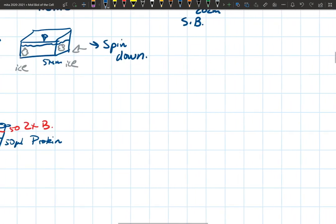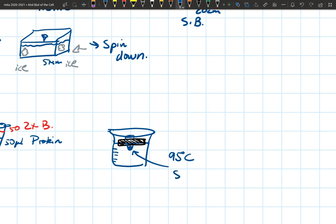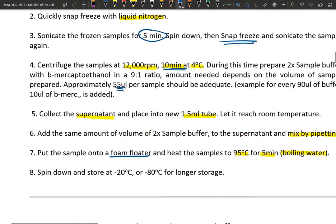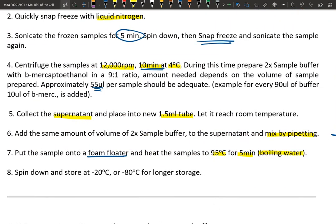After you finish pipetting, heat this sample up to 95°C for five minutes in boiling water. I usually use a foam floater. You have your beaker with hot water, and your floaters—any styrofoam that floats nicely. Put your sample on these floaters. Make sure the actual sample is touching the water at 95°C for five minutes.